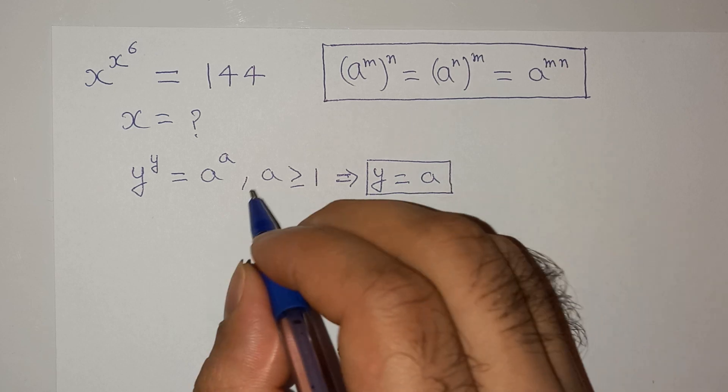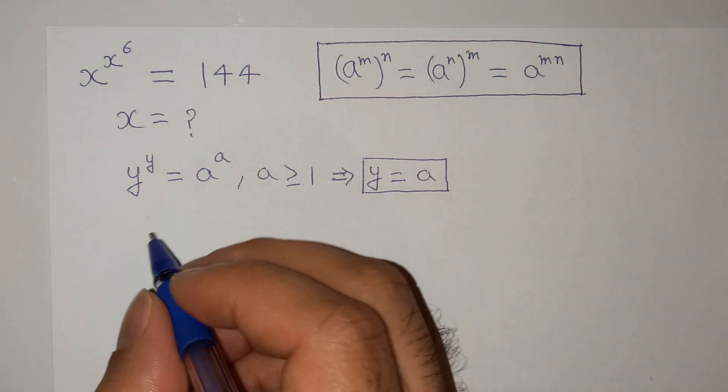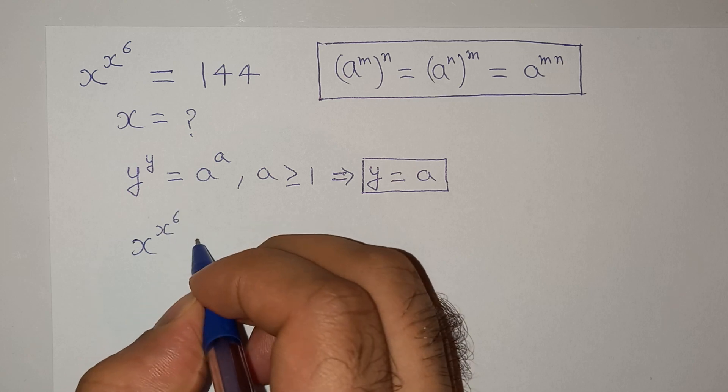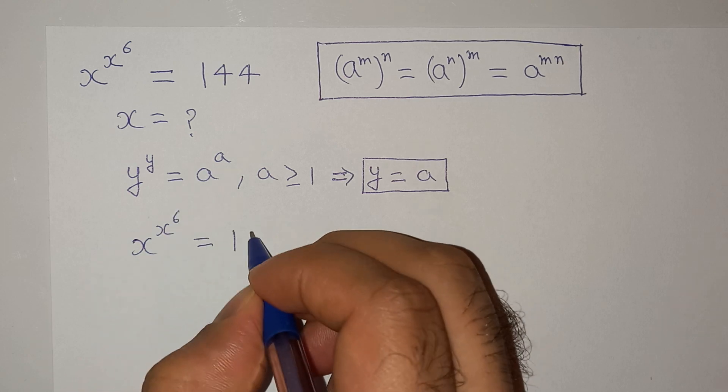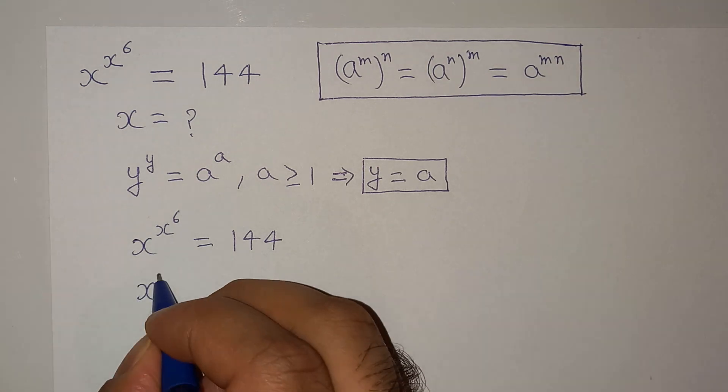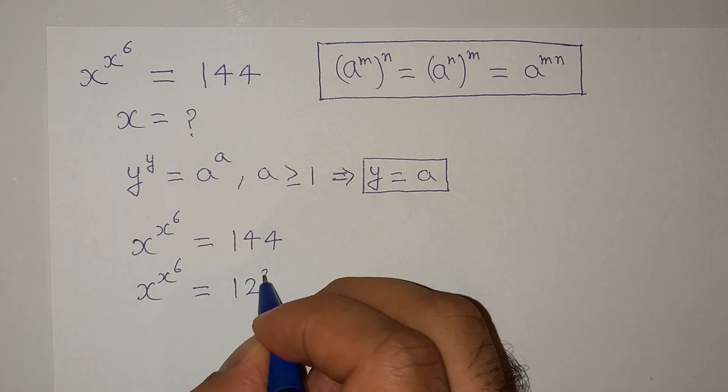So we are going to apply this rule in solving this question. The question says x^(x^6) = 144. So this can be written as x^(x^6) = 12².